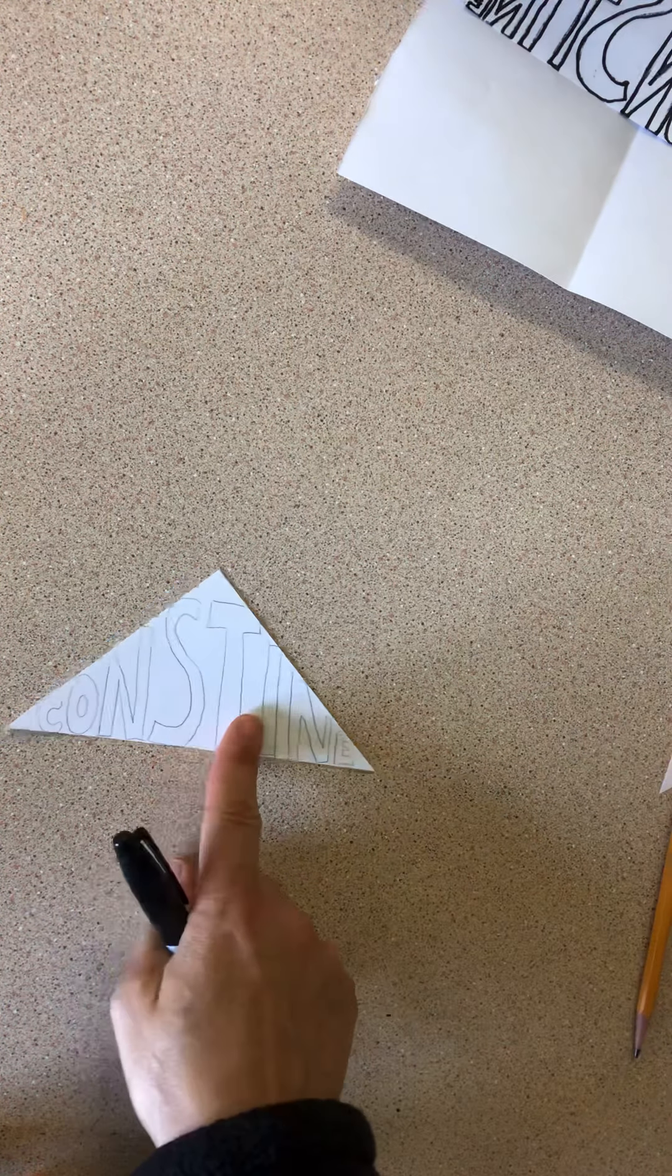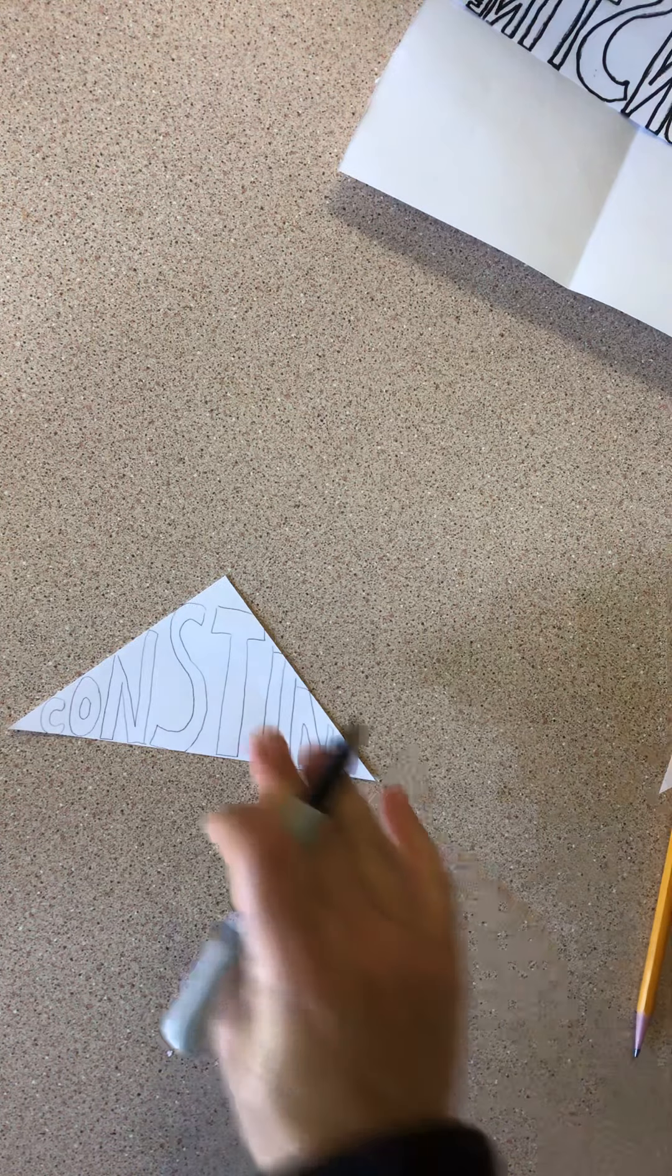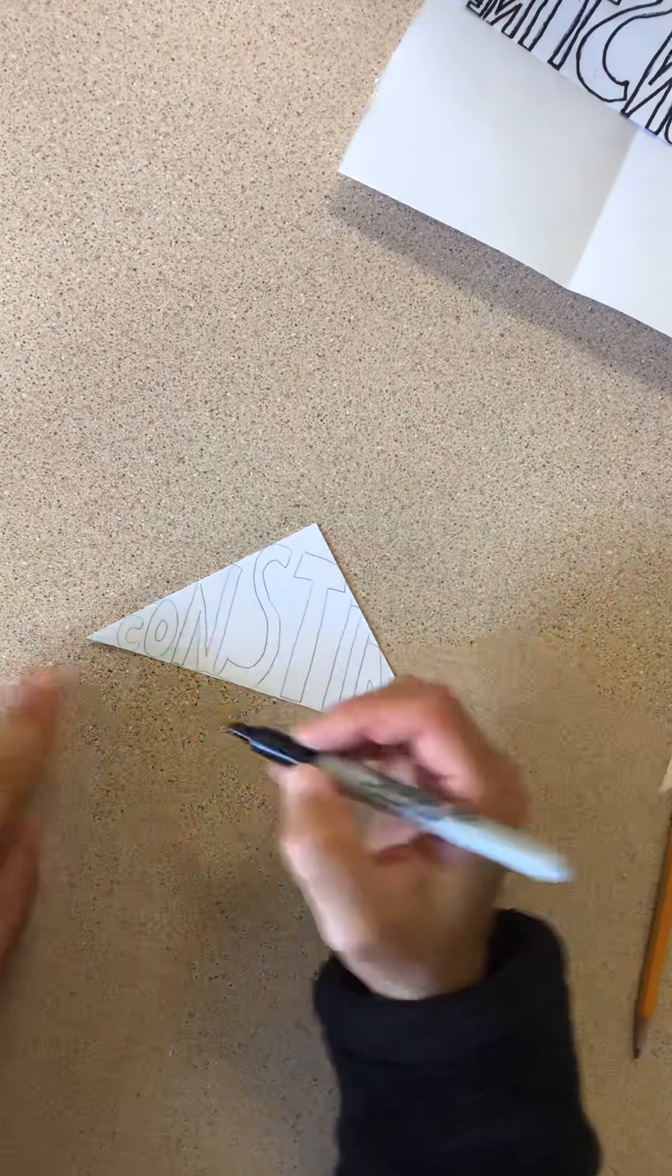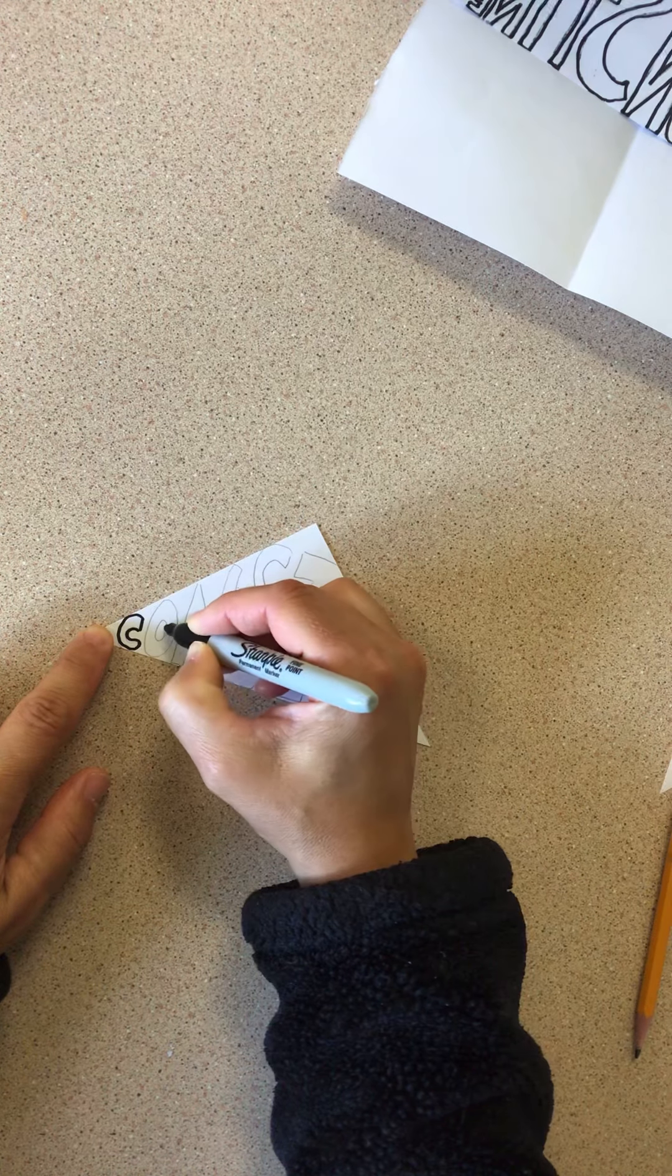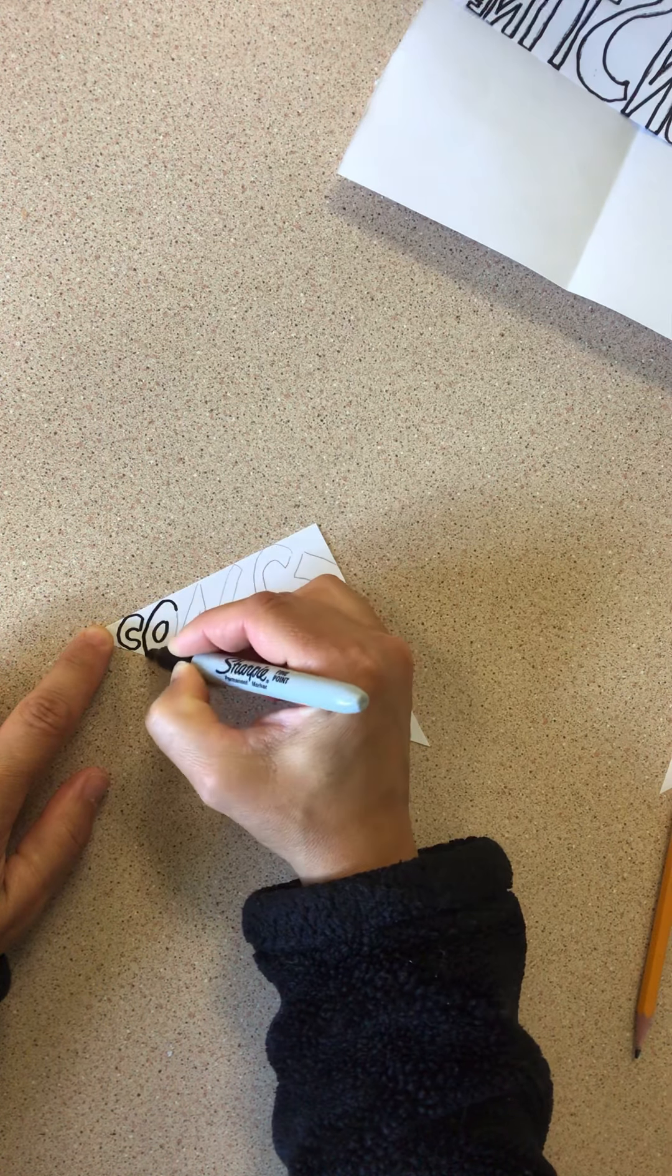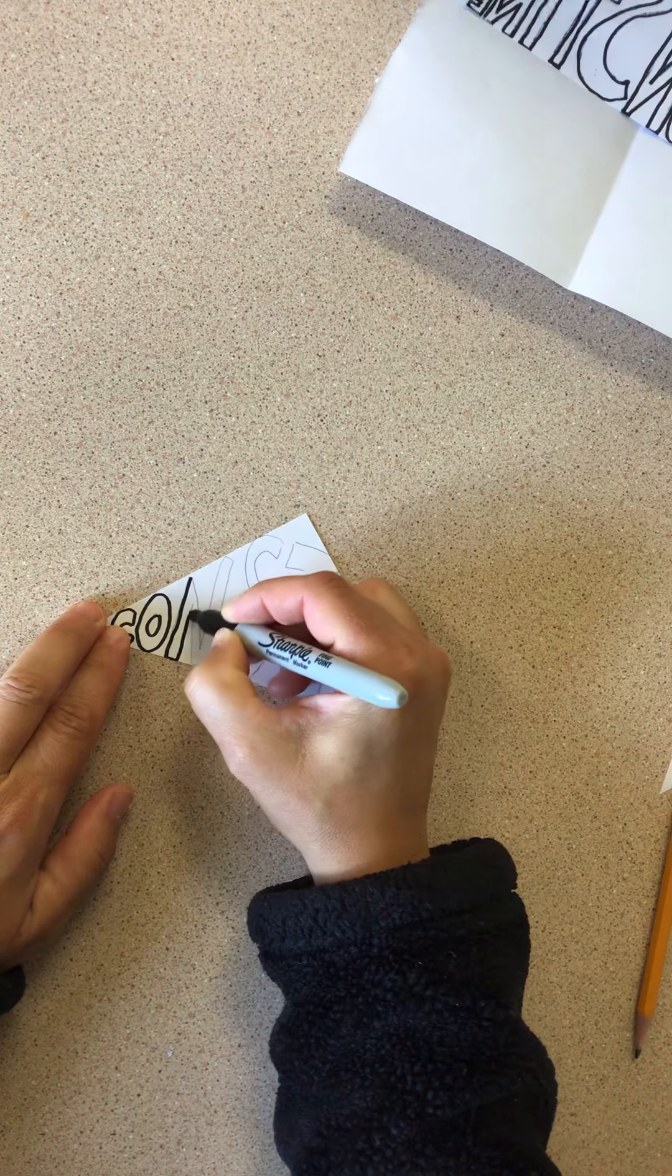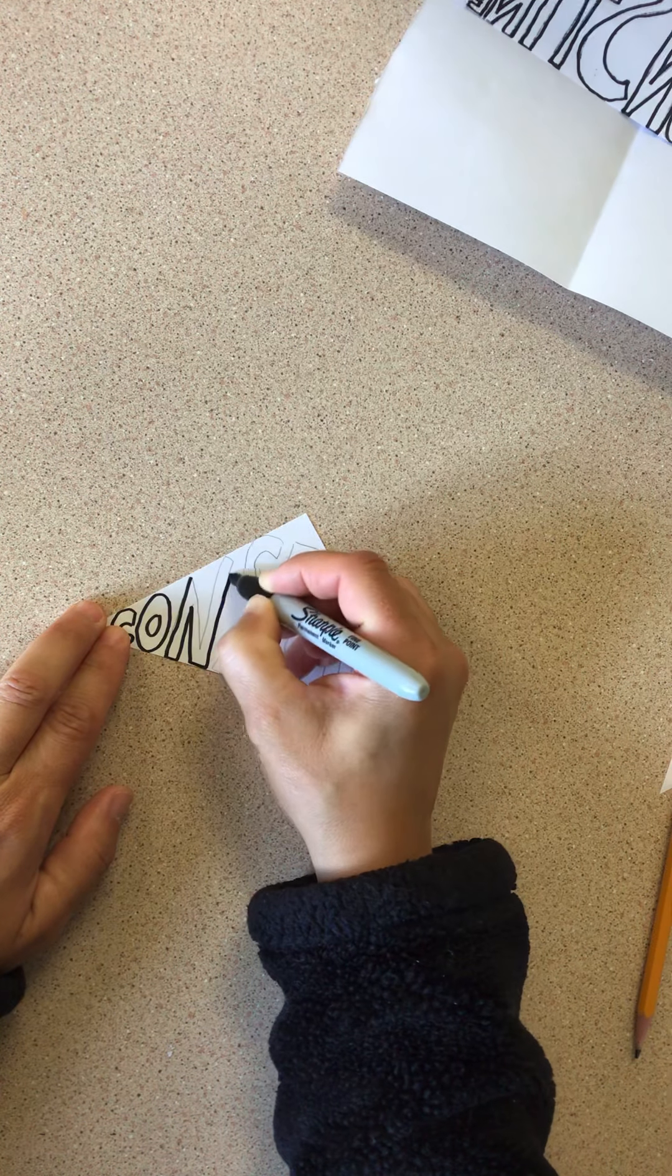All right, I'm done with pencil. Now you're going to get a Sharpie. You're going to go over your letters just like that. So I go over all my block letters.